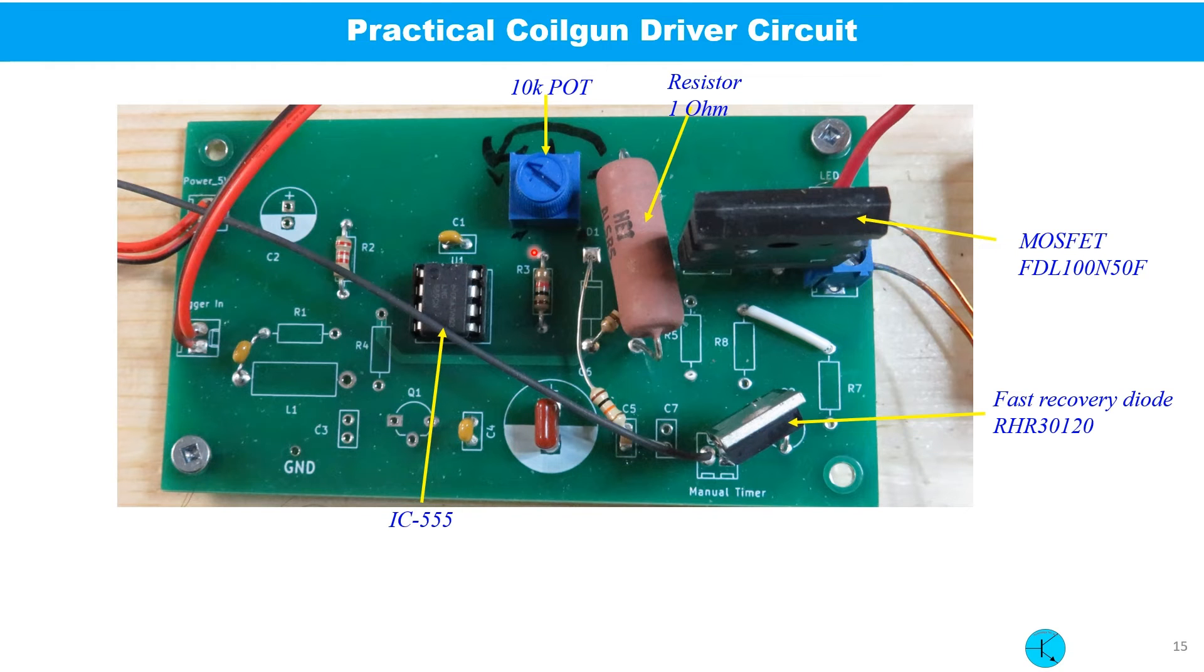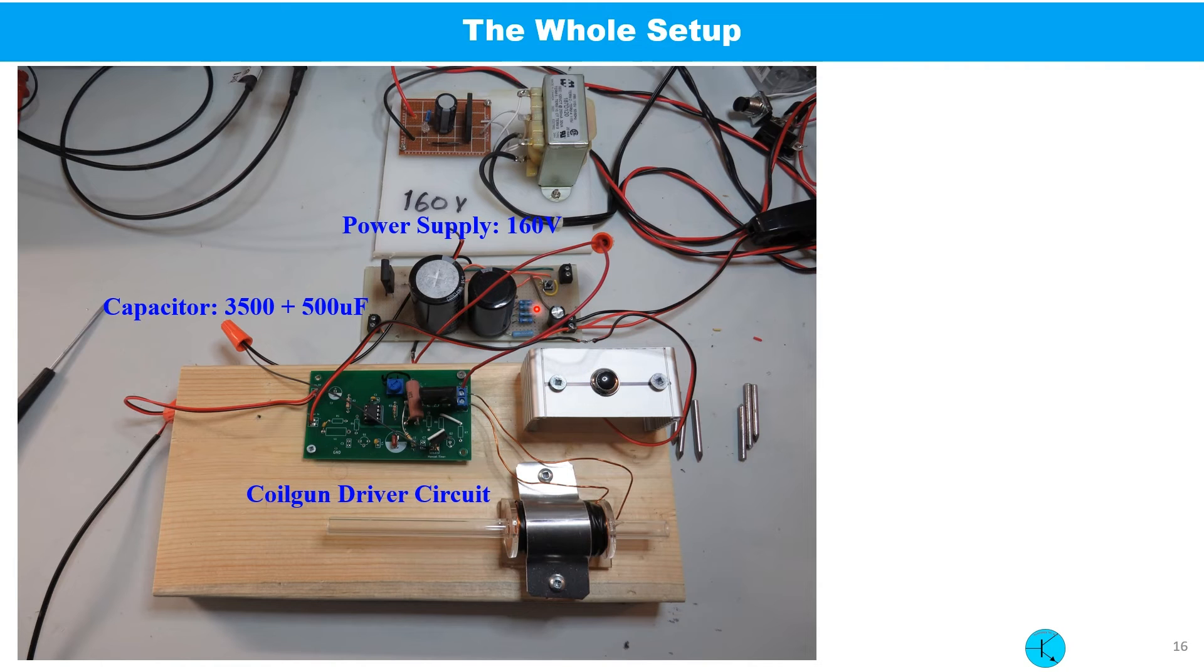This is the practical coil driver circuit that I built. The MOSFET I used is FDL150F and it can stand up to 400 volt drain to source, and average current up to 100 amp and pulsed current 400 amp. In our case, the peak current is approximately 100 amp which can be considered as a pulsed current. And this is a fast recovery diode and the 1 ohm high power resistor and this is the potentiometer.